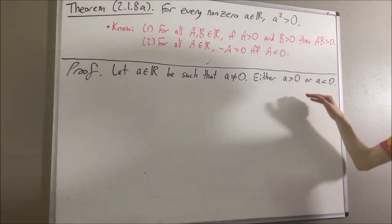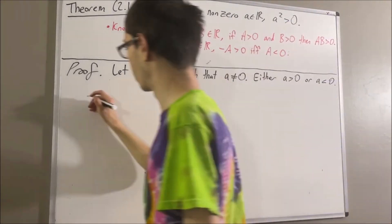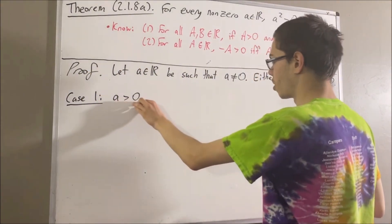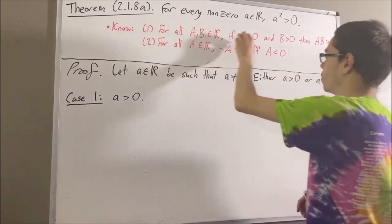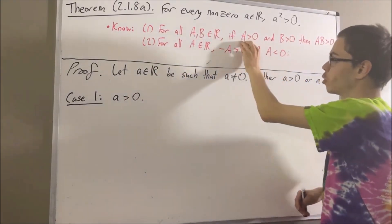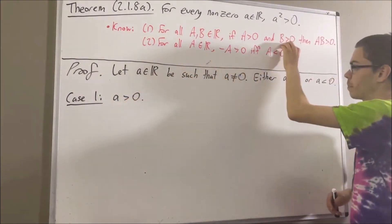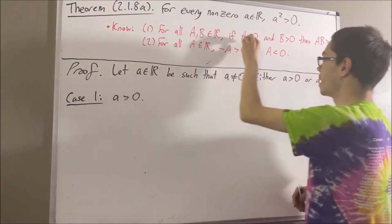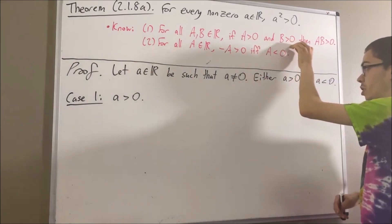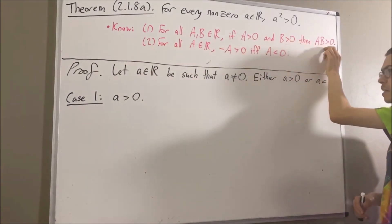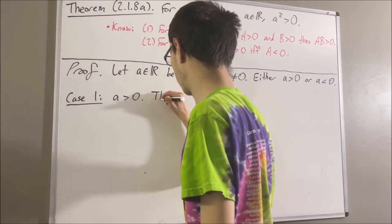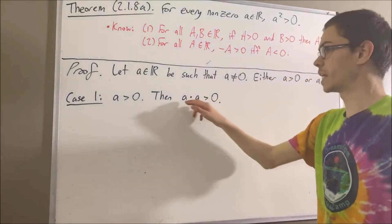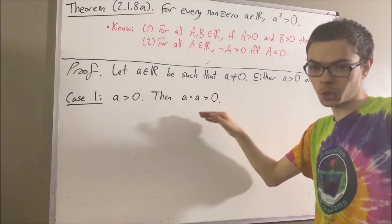Let's start with the case that a is greater than zero. Because a is greater than zero, we can apply fact number one. If we take capital A to be a and we take capital B to also be a, then a is greater than zero and a is greater than zero, therefore a times a is greater than zero. Since a squared is equal to a times a, this means a squared is greater than zero.